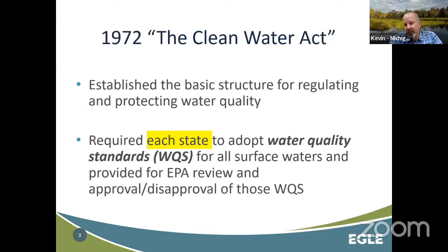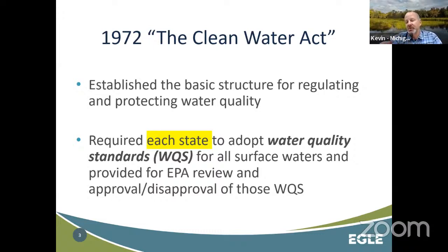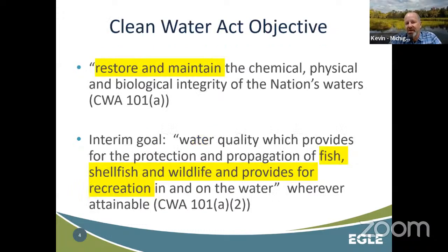The Clean Water Act is the primary document that gives the structure for regulating water quality in every state and the tribes with authority in the nation. One of the requirements under the Clean Water Act is that we all develop water quality standards. These are constants between any state or tribe that has water quality authority. The musts are similar between everybody, but how we do it can be a little different — which is why you might see slightly different numbers or different processes used to develop those.